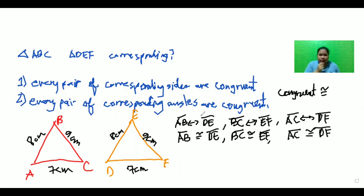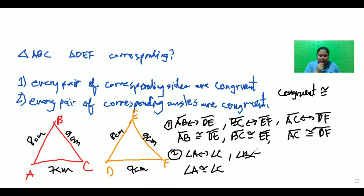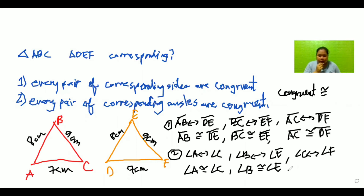This is the illustration of the first condition: every pair of corresponding sides are congruent. Now the second condition is every pair of corresponding angles are congruent. Angle A corresponds to Angle D, so Angle A must be congruent to Angle D. Angle B corresponds to Angle E, so Angle B is congruent to Angle E. Angle C corresponds to Angle F, so Angle C is congruent to Angle F.